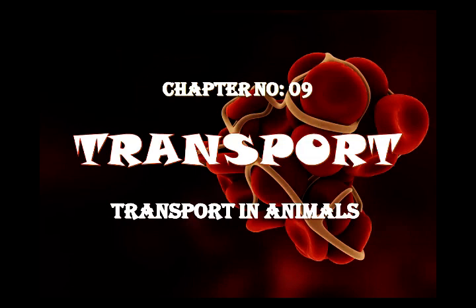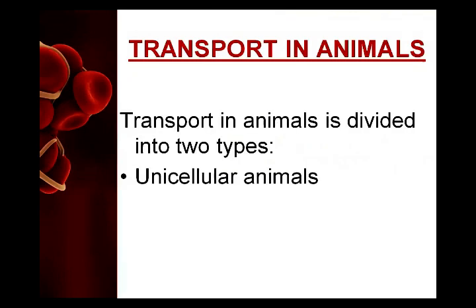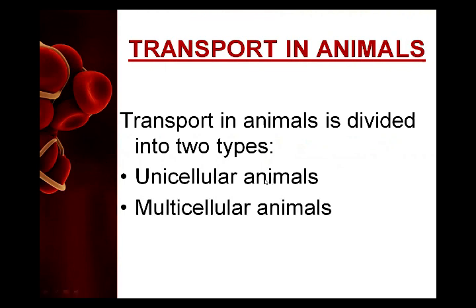The transport in animals is divided into two types according to the types of living organisms. We have two types of animals: unicellular animals - uni means one cell - and multicellular animals. Today we will learn the transport in unicellular animals and the transport in multicellular organisms like humans.